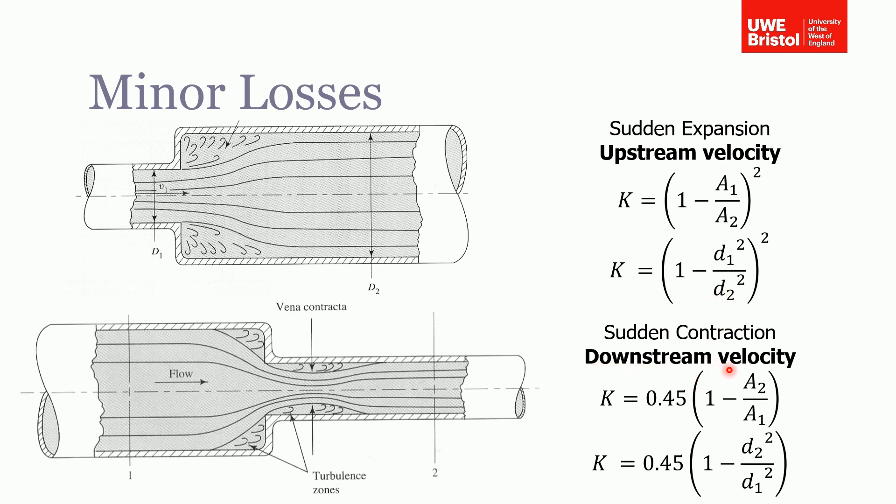So again, the fastest velocity is the velocity in the smaller pipe.